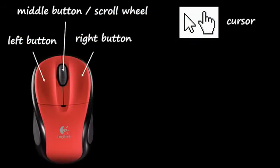To interact with these windows, users need a pointing device, and on desktop PCs that's going to be a mouse. What the user is currently pointing at on screen is represented by a cursor, which is usually just a little arrow, and they move the cursor around by moving their mouse on the desk. The typical mouse these days has three buttons — a left button, a right button, and a middle button. The middle button on most mice doubles as a scroll wheel, so you can push it in to click, or roll the wheel up and down.